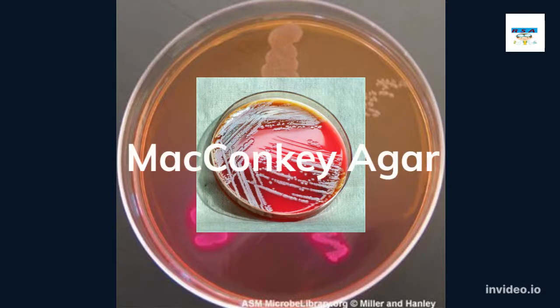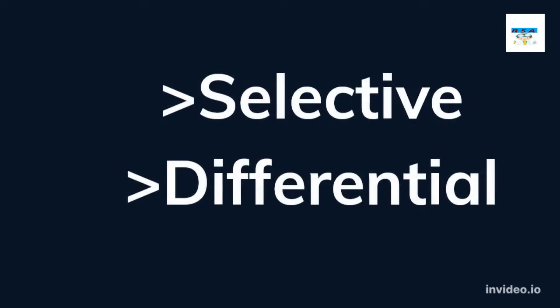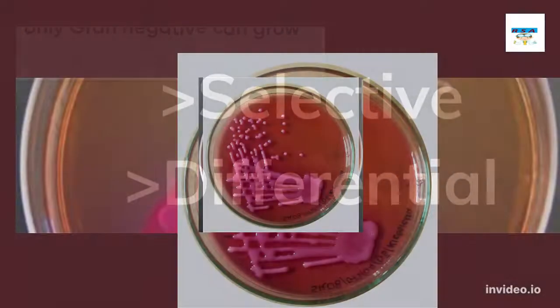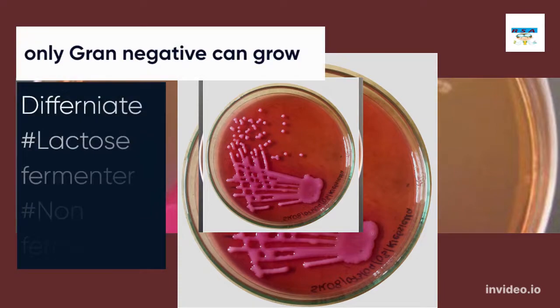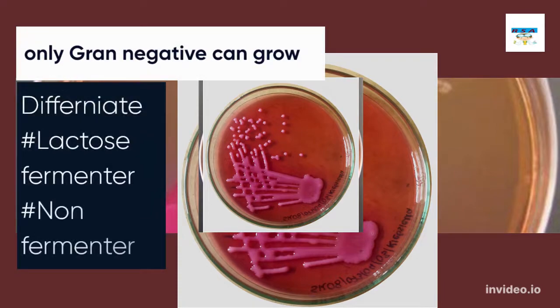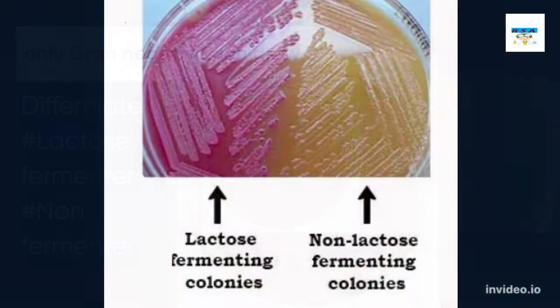McConkie agar is a solid, selective and differential agar that only cultivates gram-negative bacterial species. It can further differentiate gram-negative organisms based on their lactose metabolism. Lactose fermenter colonies turn red or pink on McConkie agar, while non-fermenters do not change color.